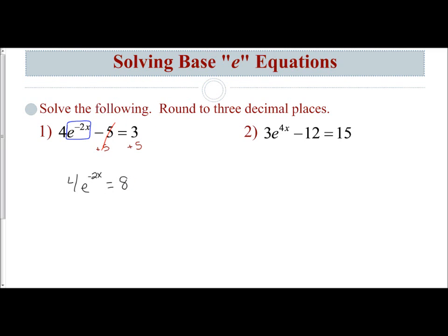I still need to isolate this base e first, so I'm going to get rid of my coefficient by dividing both sides by 4. That allows me to get e to the negative 2x by itself, and 8 divided by 4 is 2. So right now I know e to the negative 2x power equals 2.